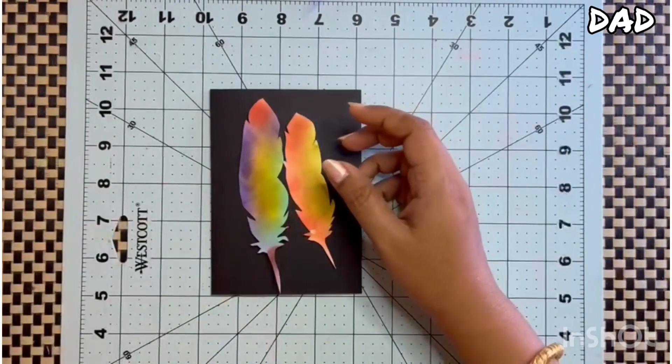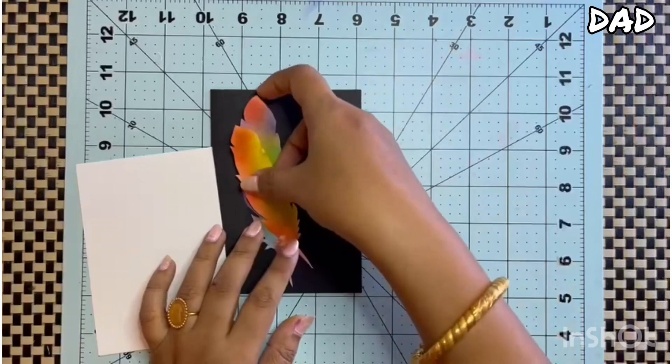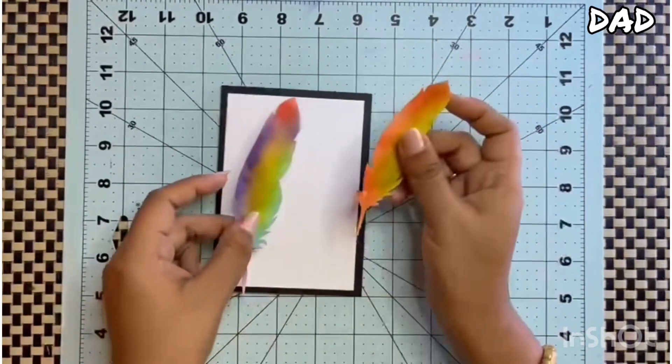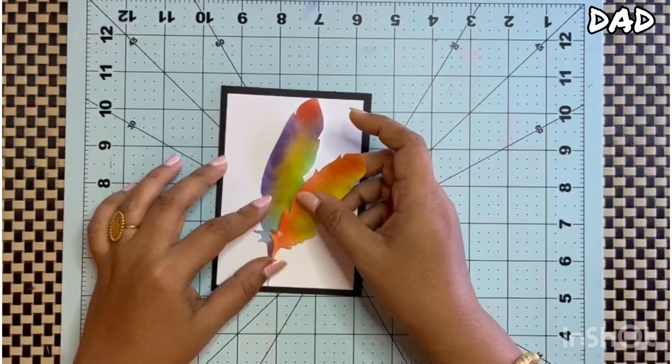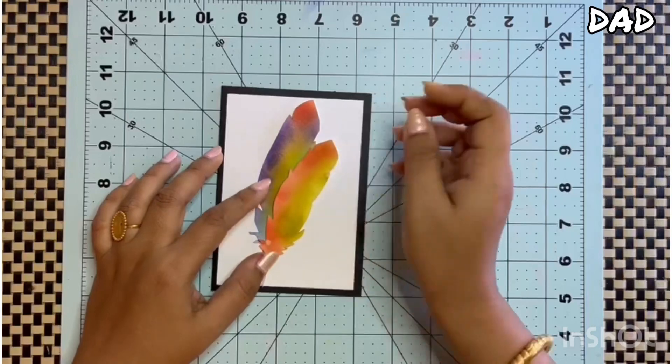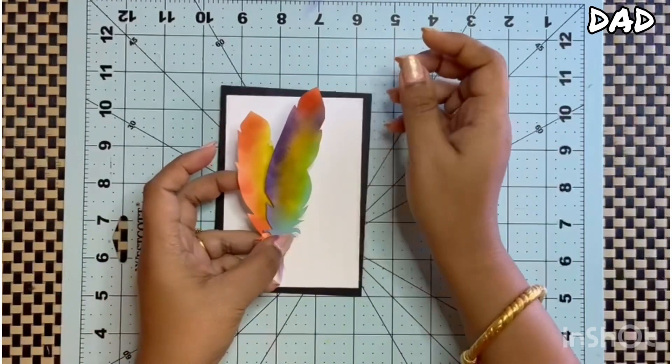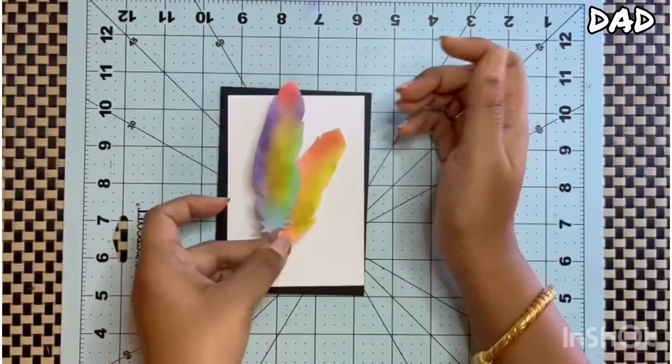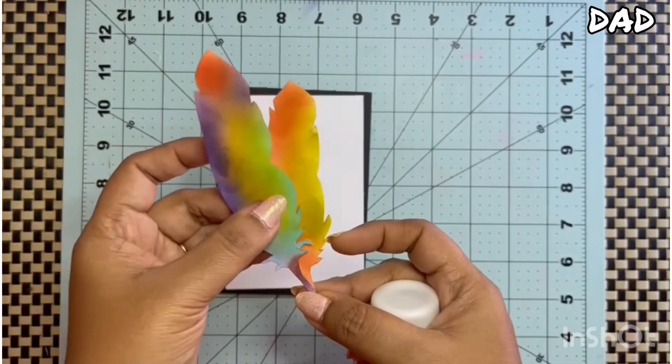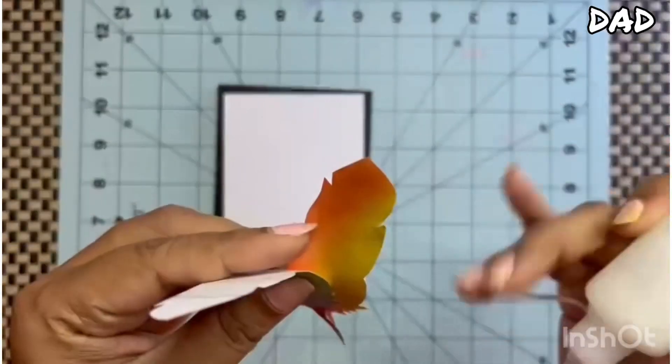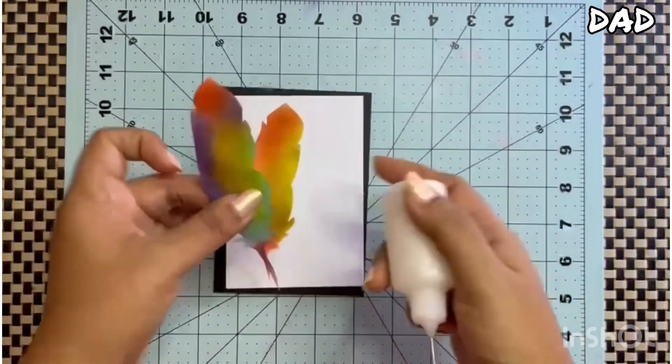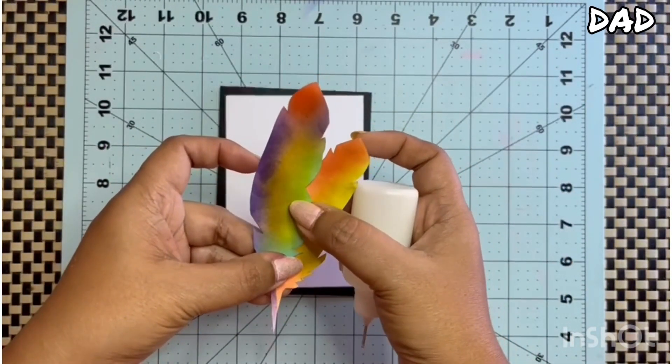Now I will be adding the feathers onto the top layer of my card. You can go like this maybe. Now taking these two together like this, I will be adding some glue. I haven't done any coloring at the back because the back will be attached and it will not be visible.